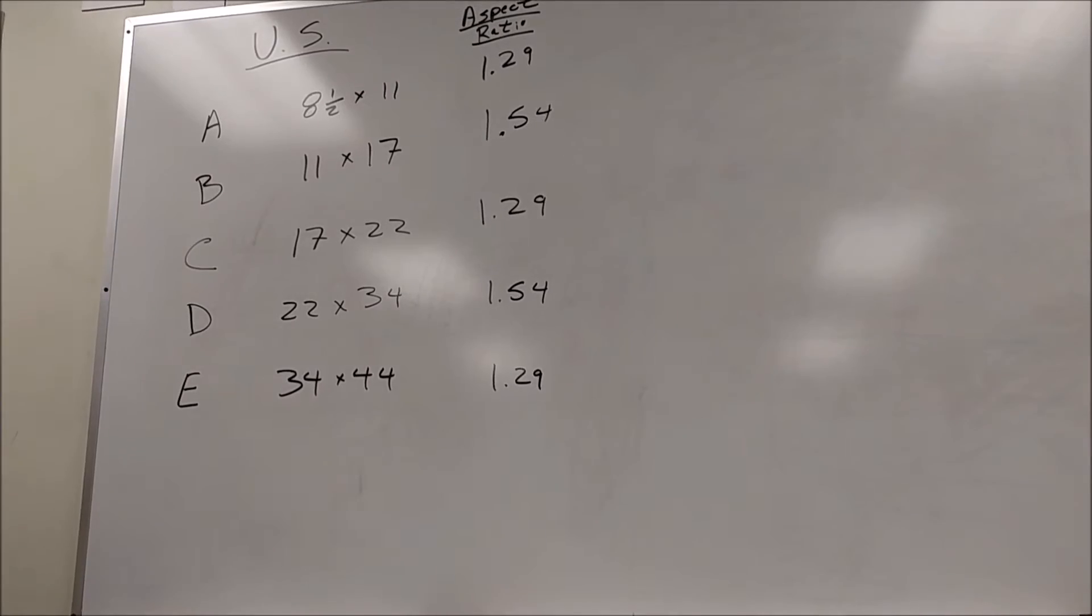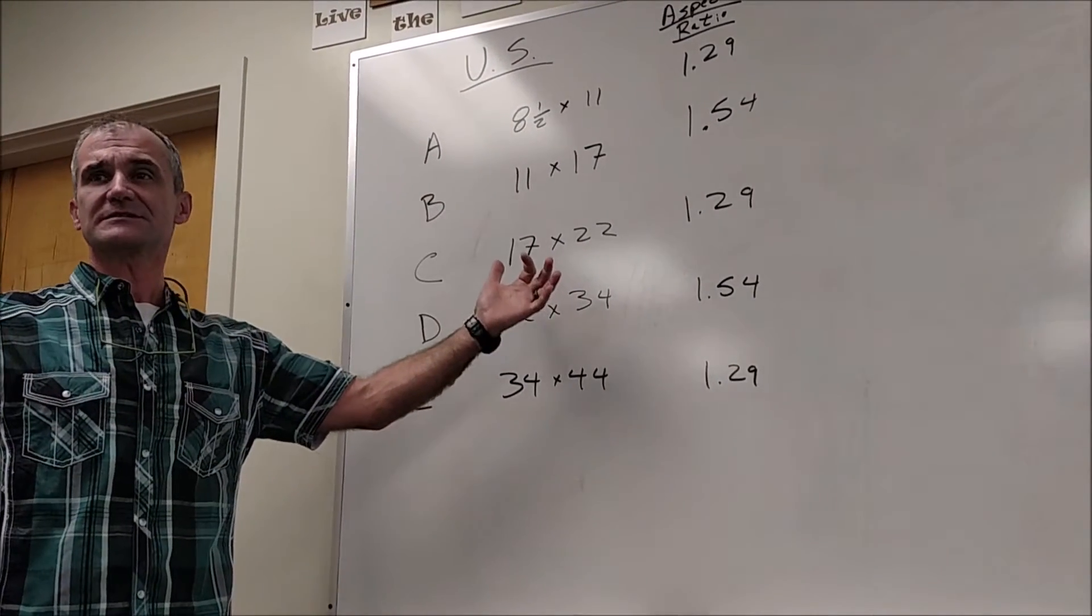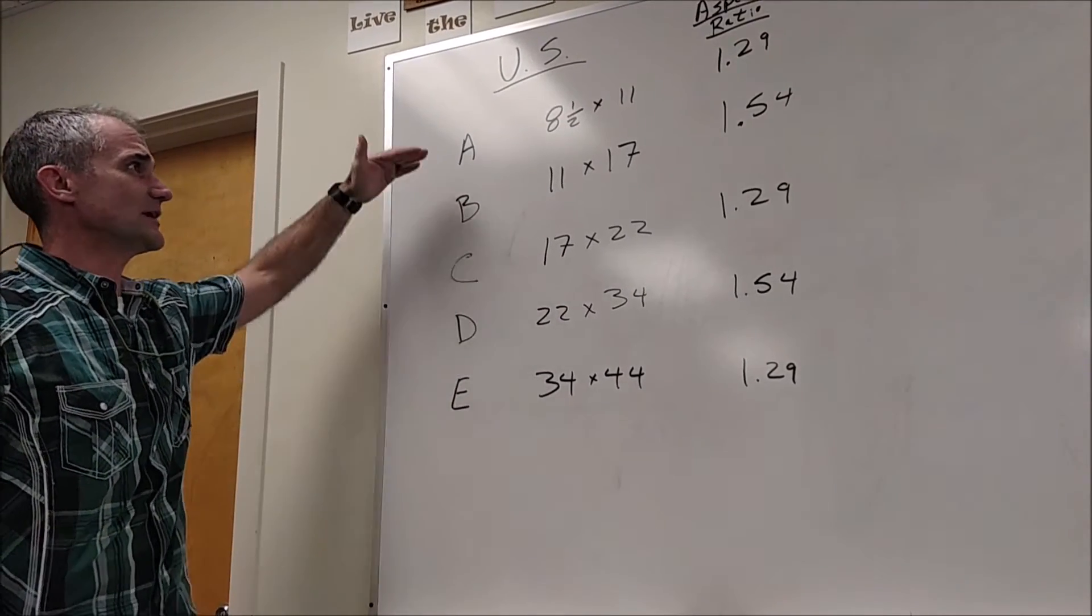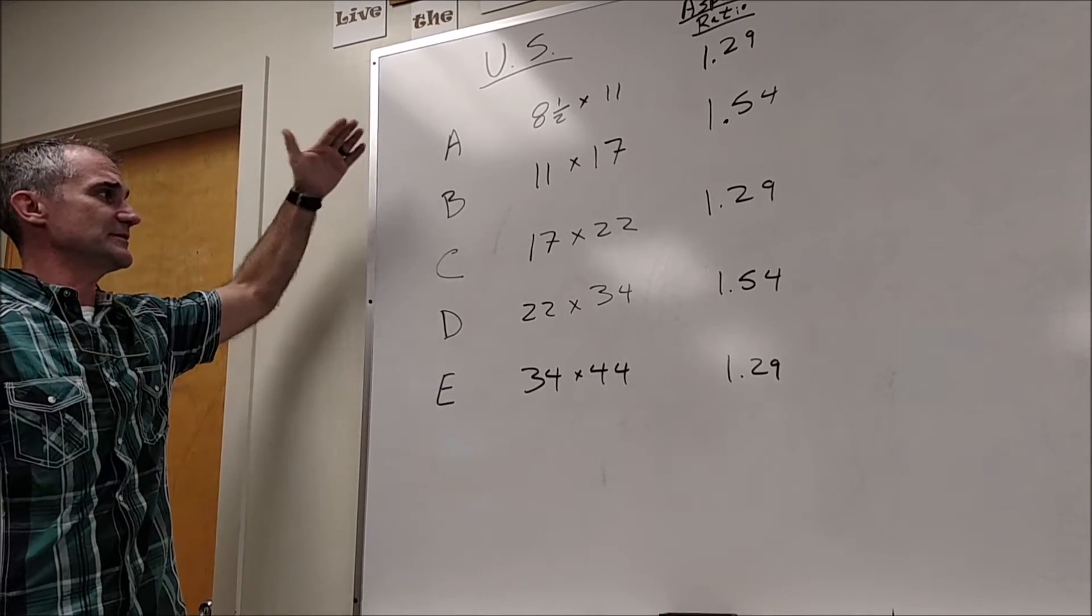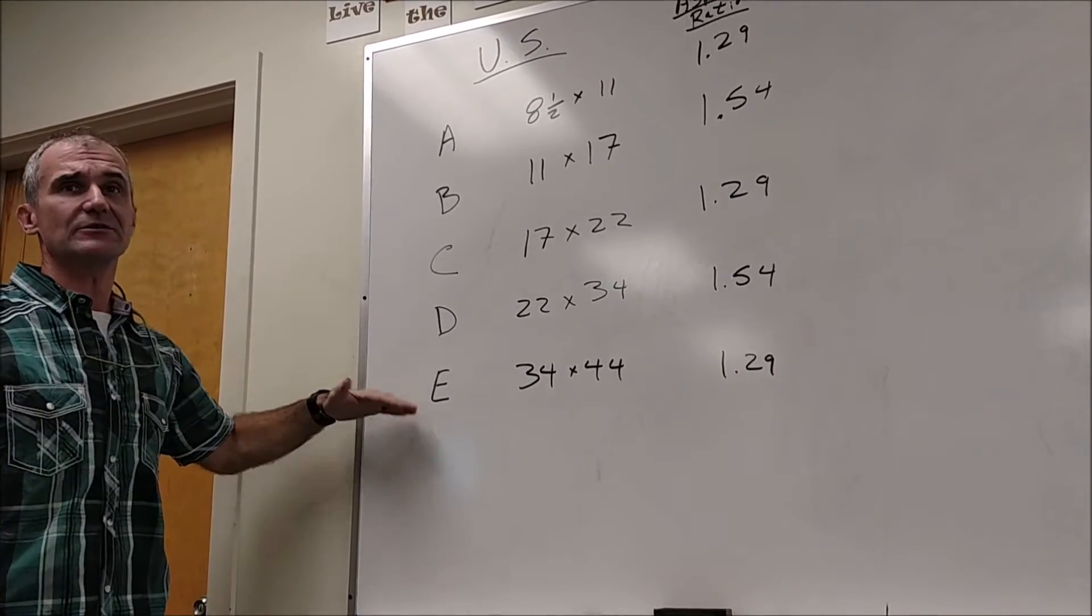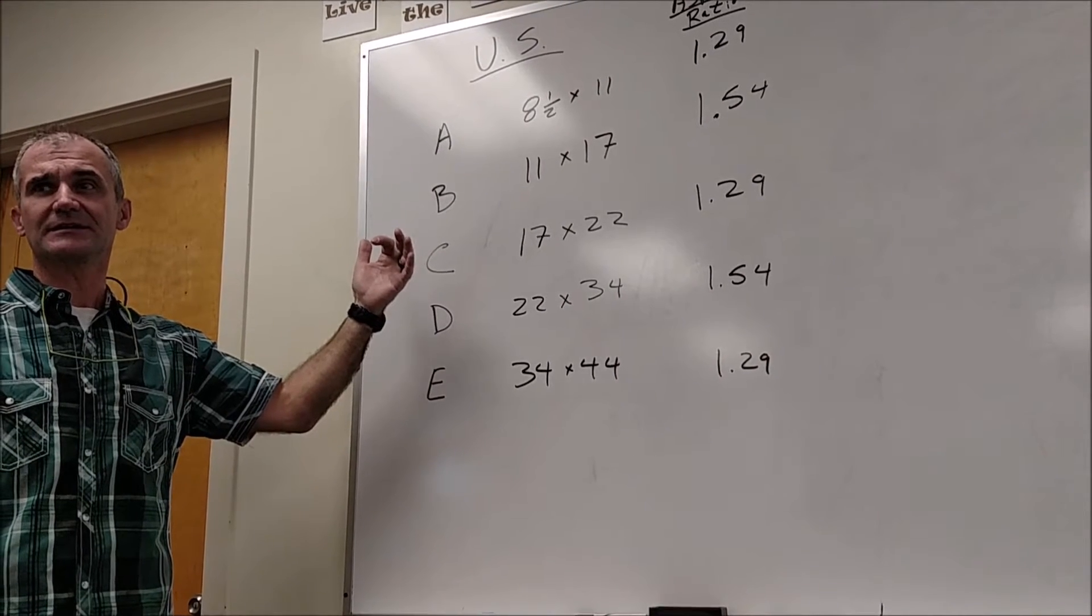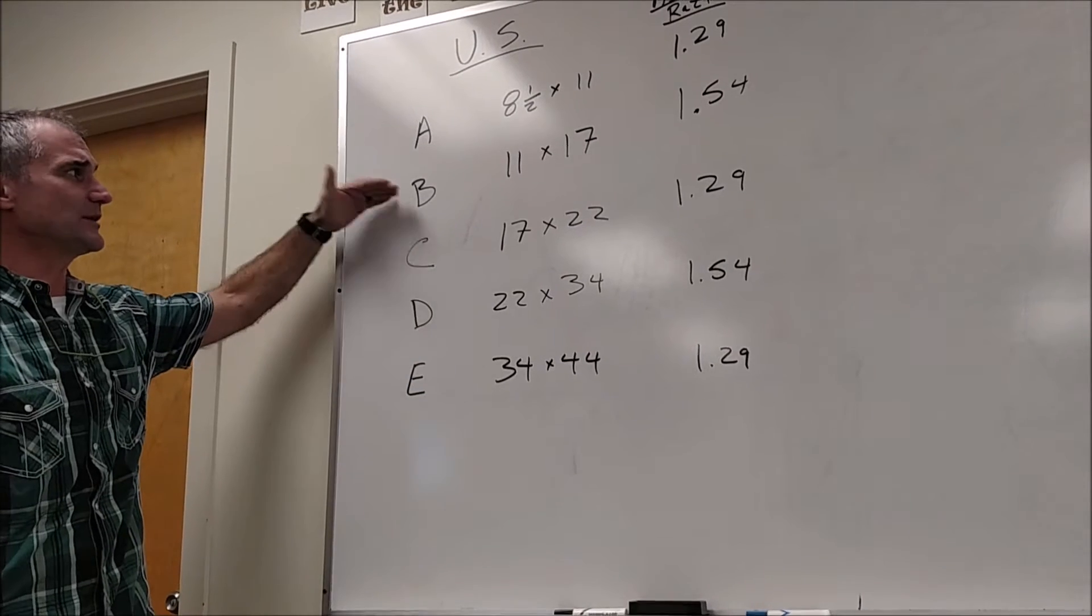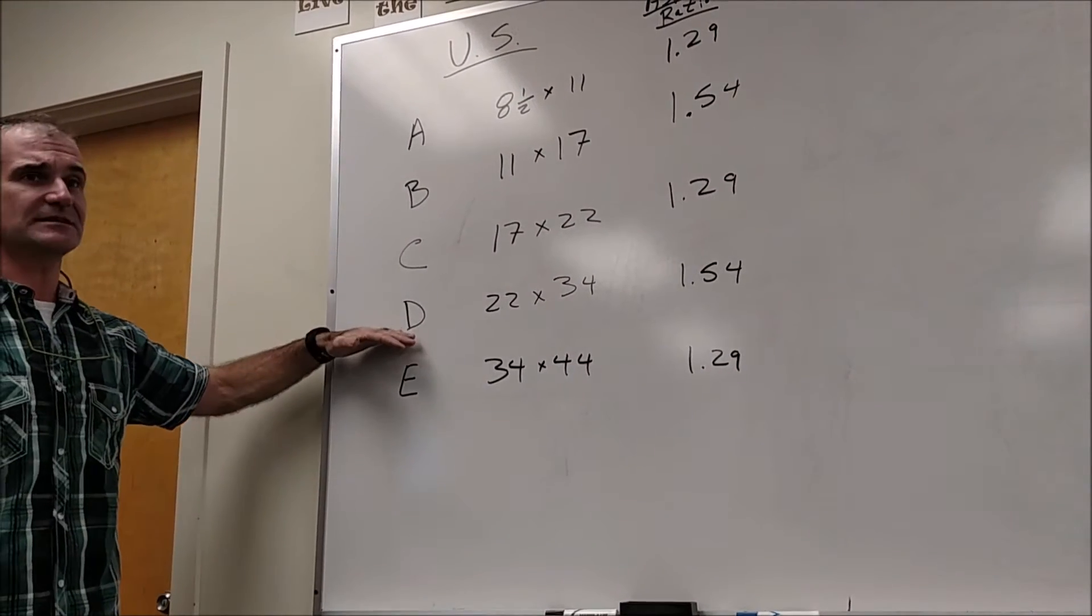So why this is kind of important is if you have a drawing and you want to keep it to scale and increase the size of paper, you have to go every other step. So either you have to draw it on eight and a half by eleven and then increase the image to C or E, or you're going to lose the ratio of sides. Everyone understand that? So if I want to do a small drawing of my house, I'd be better off drawing it in B size paper and then I could just scale it up to D size paper.